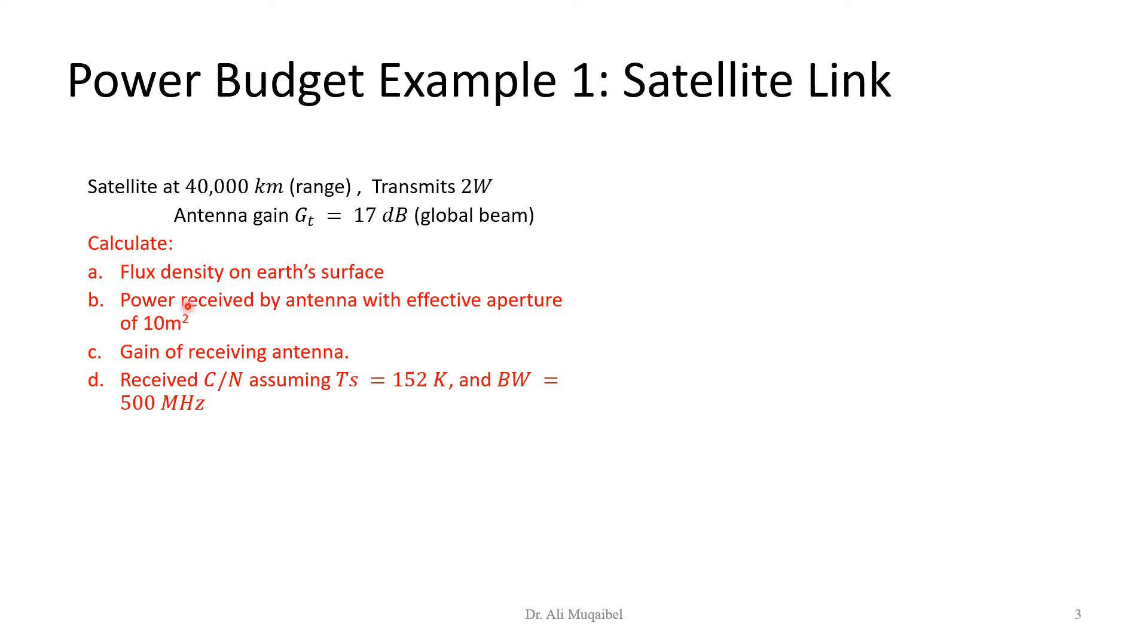Then we look at the power received by the antenna with the effective aperture of 10 meters squared. Once we find the flux density, we can find the received power by multiplying by the area gain of the receiving antenna. Then we want to know the received carrier to noise ratio assuming the following noise temperature and the bandwidth of the system to be 500 MHz.